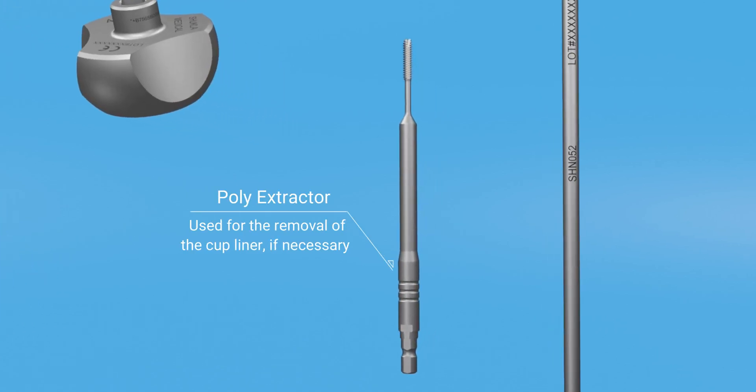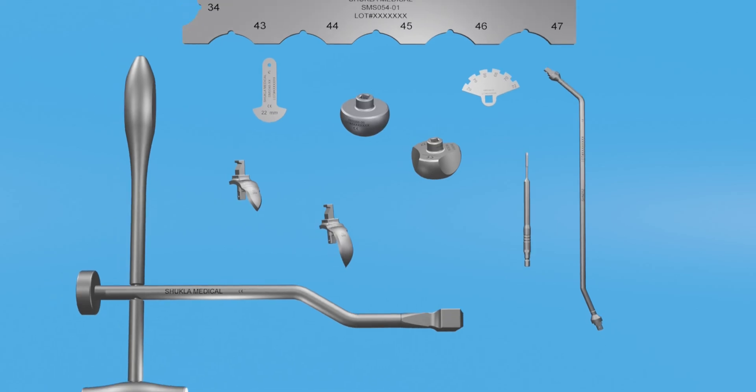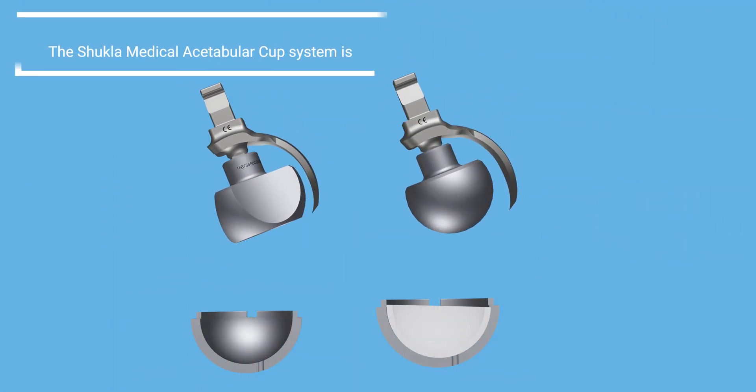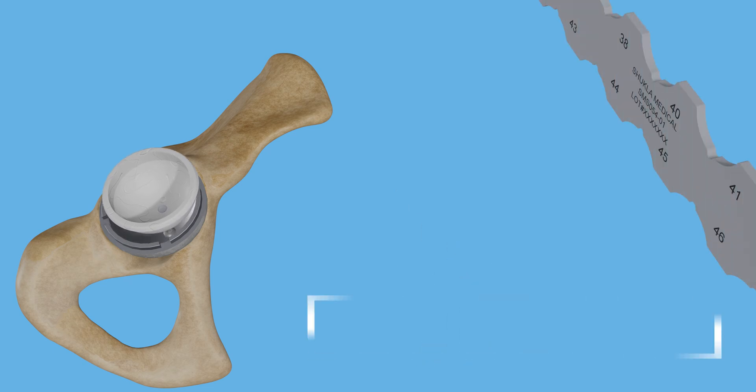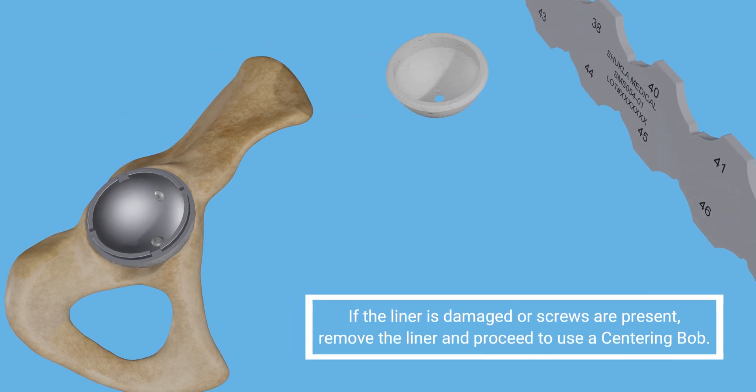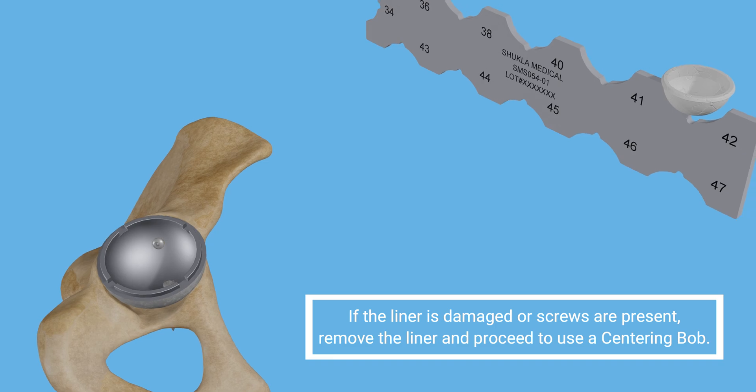The poly extractor is used to remove the cup liner if necessary. Match the removed liner with the poly radii gauge. The diameter indicates the centering bob size that will be used.